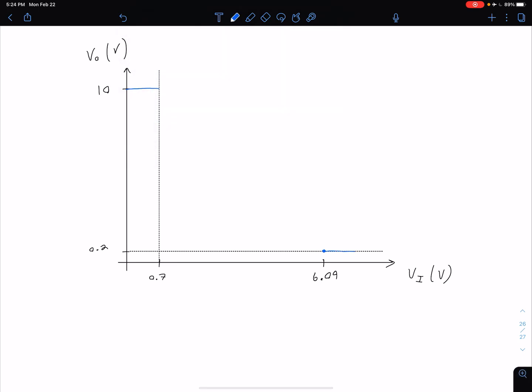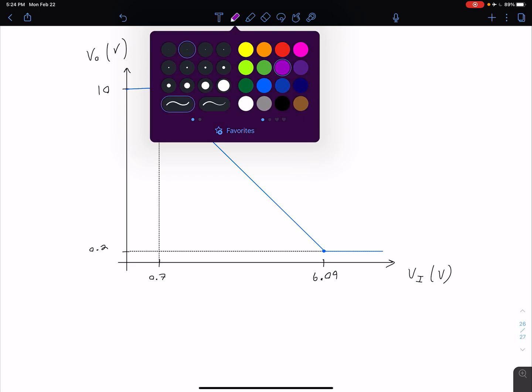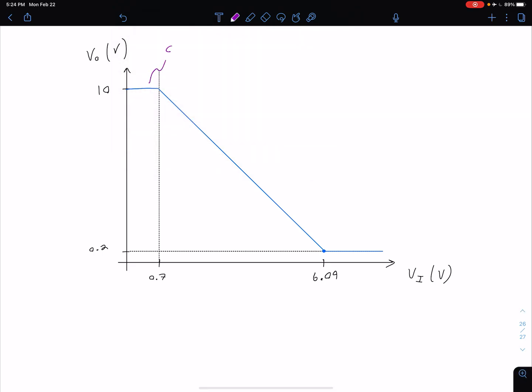From there on out we're going to be in our saturation mode. In between there we can approximate this to our first order as just a linear line connecting these two points. The three modes then are up here we have cutoff, here is our linear region which is our forward active mode, and then down here we're in our saturation mode.